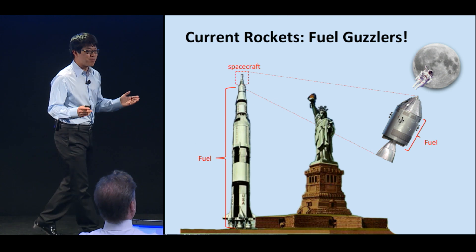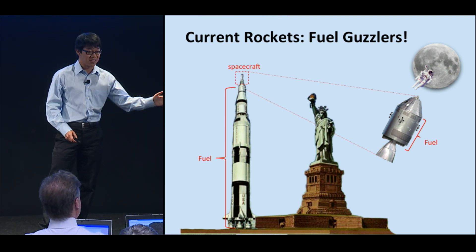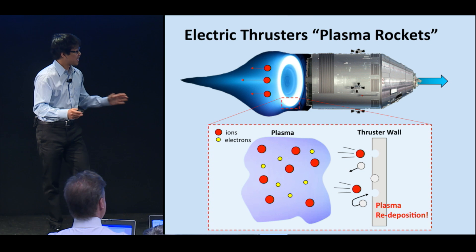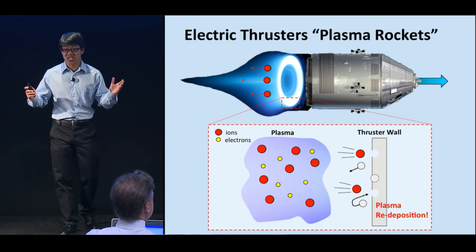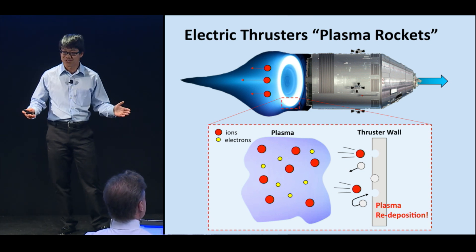So how do we get to Mars, which is 200 times further away than the moon? The answer is an ultra-fuel-efficient technology called electric thrusters, or plasma rockets.